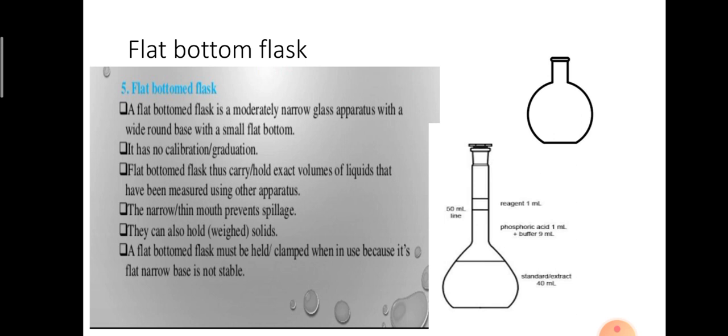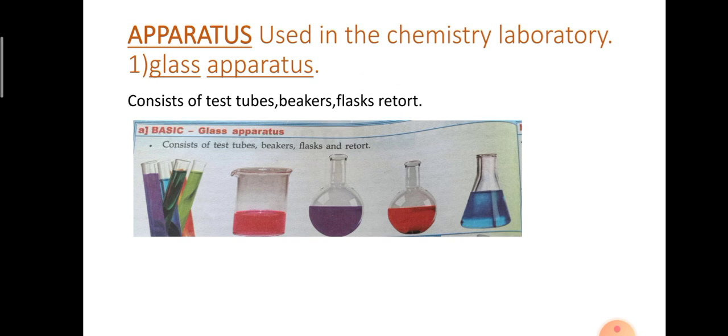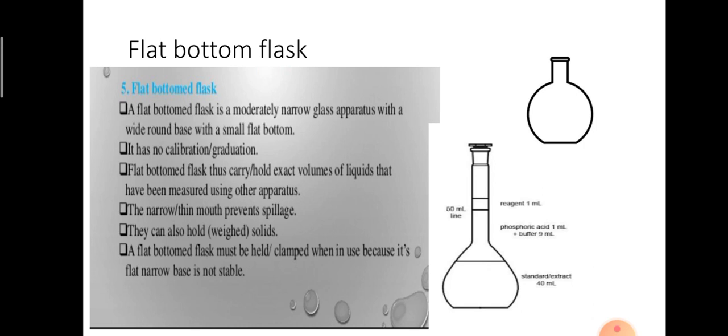In this class, we learnt about the glass apparatus used in the chemistry laboratory. The glass apparatus consisting of test tubes, beakers and retort — retort we will continue in the next class. In this class, we learnt about test tubes, beakers, and flasks: conical flask, round bottom flask and flat bottom flask. One characteristic and one use is enough. Any doubt regarding this or glass apparatus, you can contact my number provided below this video. Thank you, students. Have a nice day.